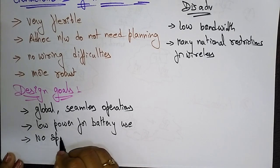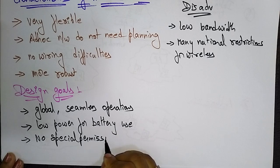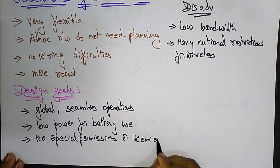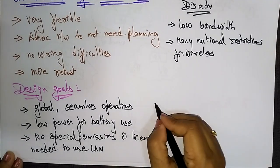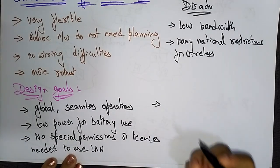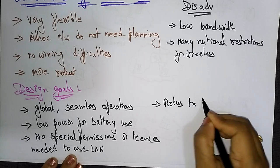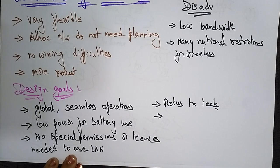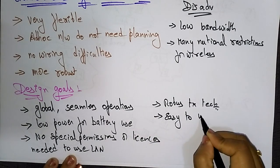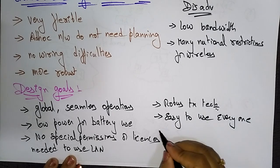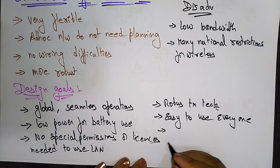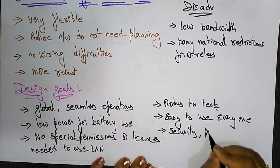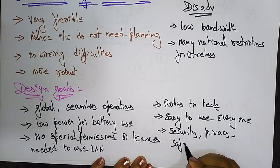No special permissions or license are needed to use the local area network. Robust transmission technology is also a design goal. The network should be easy to use for everyone, and security, privacy, and safety must all be provided — these are key considerations when designing a wireless local area network.